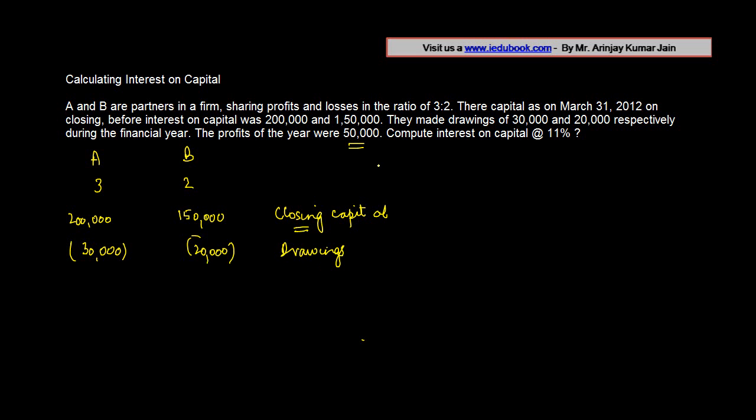Compute interest on capital at the rate of 11 percent. Now one of the interesting things that you would have noted is that the closing capital is given. Right now I don't know what is the opening capital, but my interest on capital has to be allowed on opening capital.